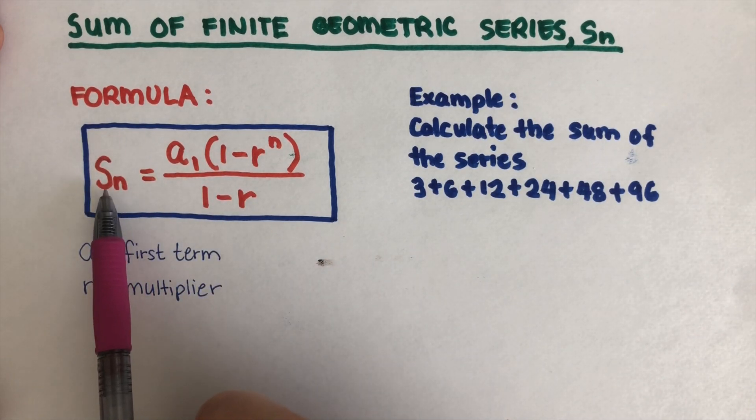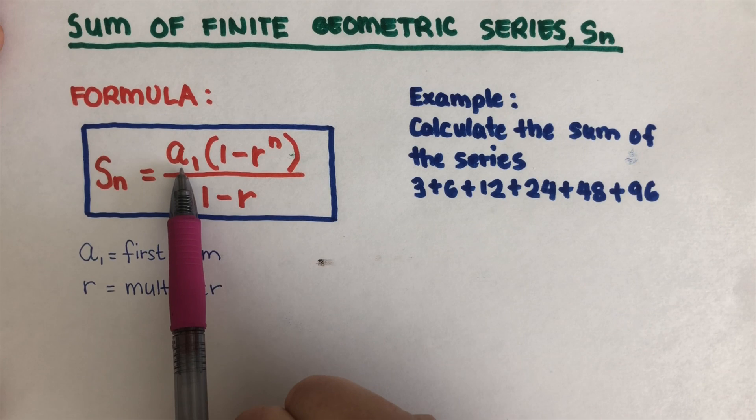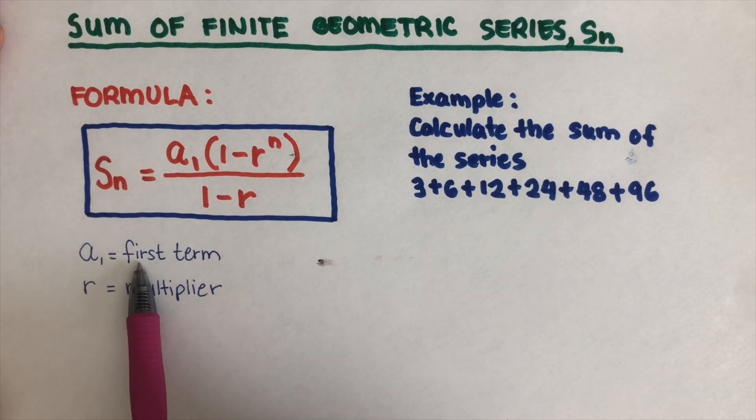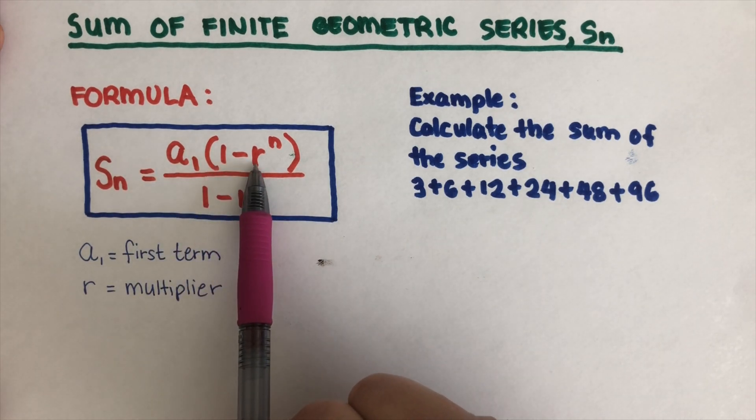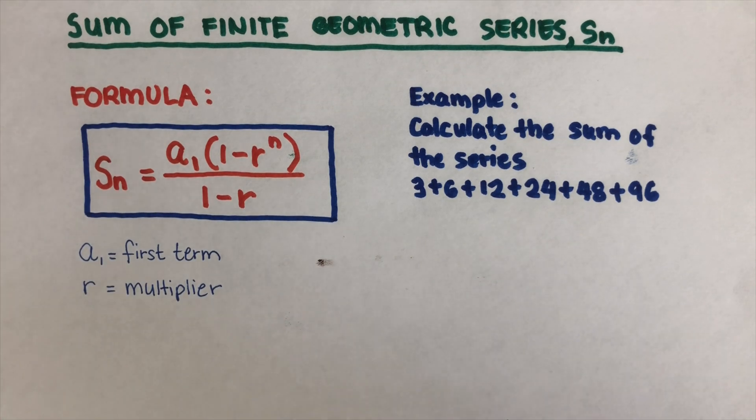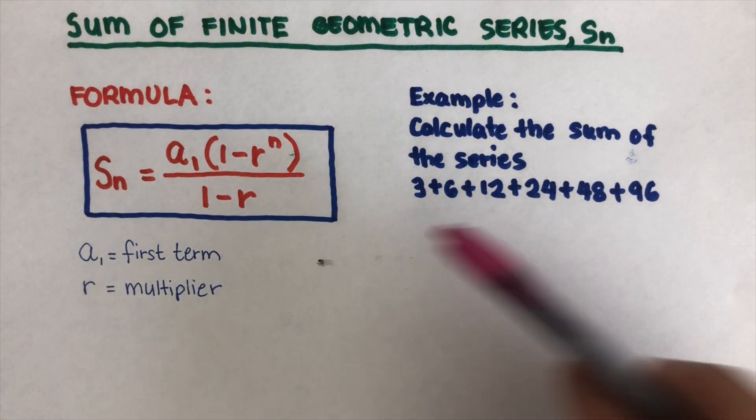So S sub n is representing the sum. A sub 1 is the first term, and then the r here is the multiplier. Now let's have an example to see how this formula works.